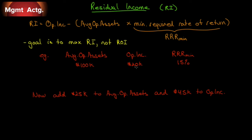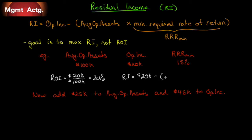Let's say we have average operating assets of $100,000, operating income of $20,000, and a minimum required rate of return of 15%. To calculate ROI: $20,000 over $100,000 gives us 20% ROI. To calculate residual income: operating income minus required rate of return on assets — $100,000 times 15% equals $15,000 — so residual income is $5,000. We're earning more than the minimum required return, so it's a go.